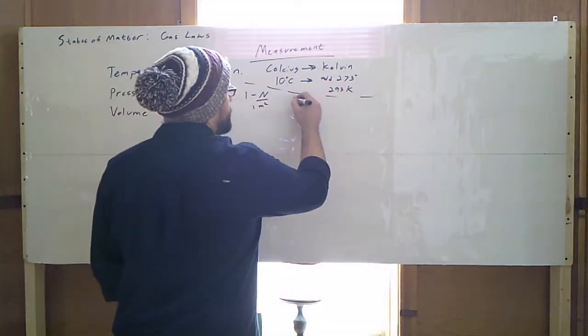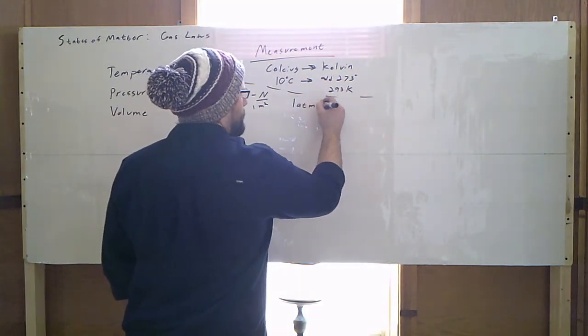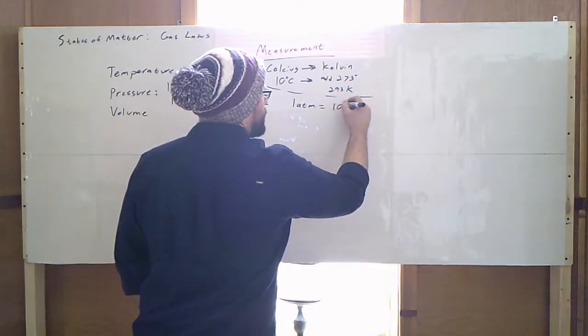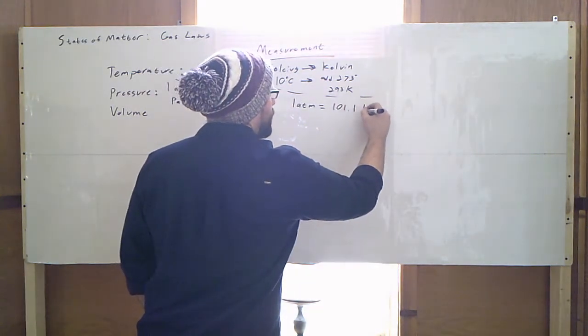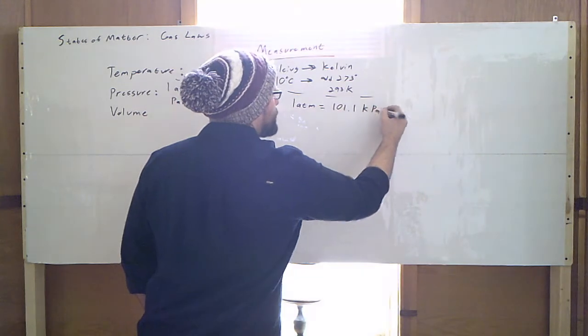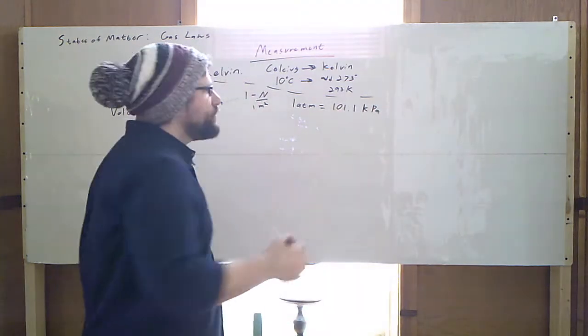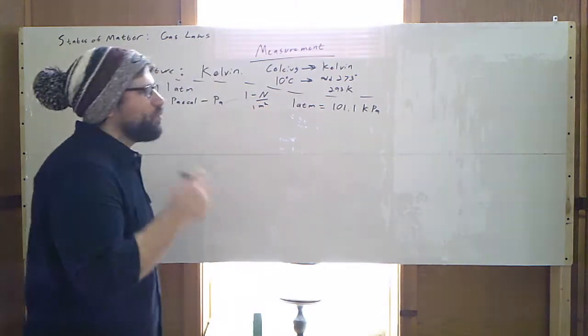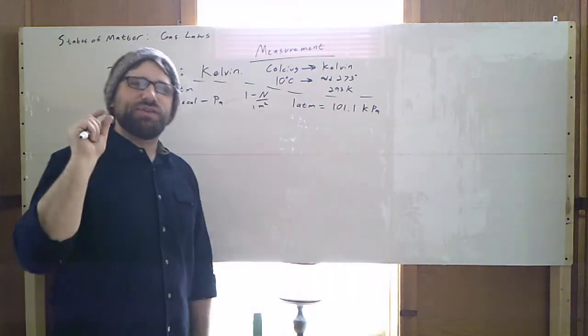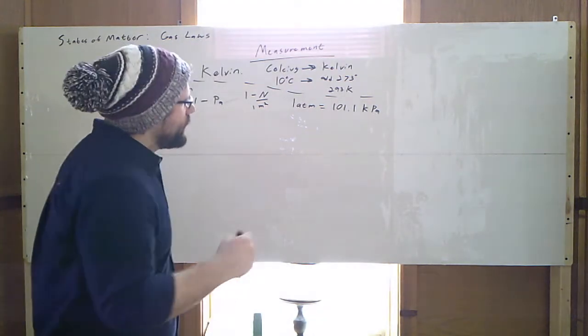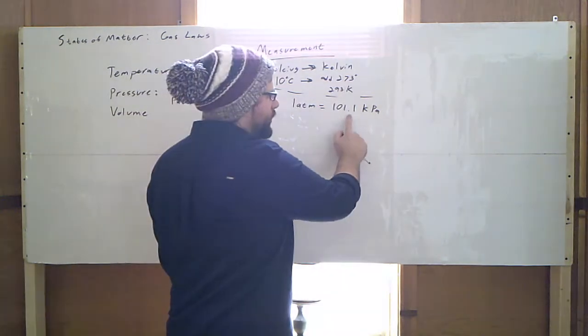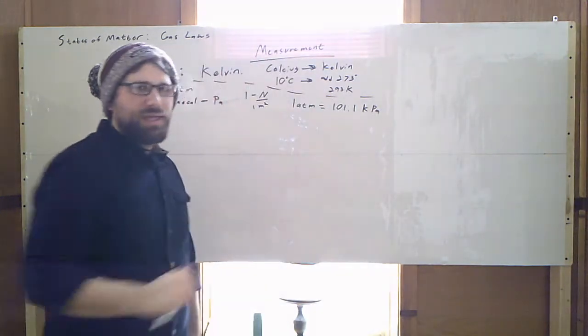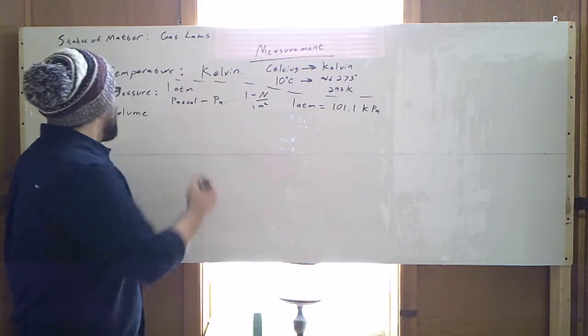For your convenience, one atmosphere of pressure is equal to 101.1 kilopascals. We will commonly use kilopascals, which is 1,000 pascals, because one pascal is a very small amount of pressure. So currently you are experiencing 101.1 kilopascals.